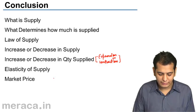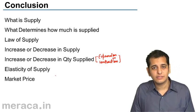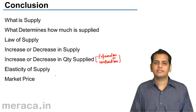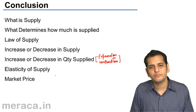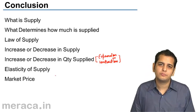And finally, we've done what is elasticity of supply. Elasticity of supply is the responsiveness of supply to a change in price.